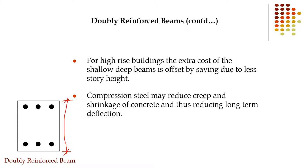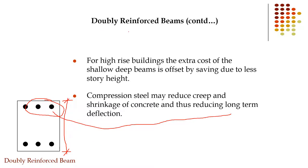Compression steel may reduce creep and shrinkage of concrete, thus reducing long-term deflection. In the long-term deflection formula, only the compression steel parameter is used. By providing the compression steel, we get lesser long-term deflection — that is also a benefit of doubly reinforced beams.